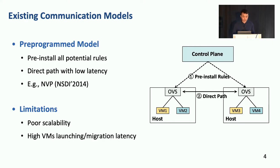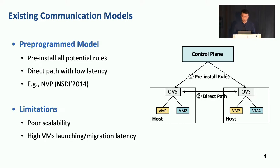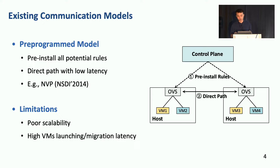Let's look at existing communication models. The first is the pre-programmed model, which pre-installs all potential rules when launching VMs, allowing traffic to be forwarded directly with low latency. However, this model suffers from long VM deployment delay and poor scalability, as it takes a long time to install a large number of rules before launching VMs.